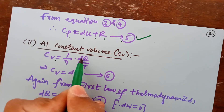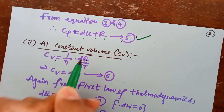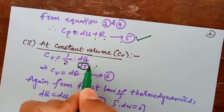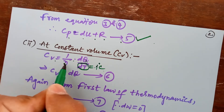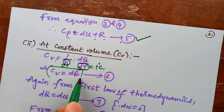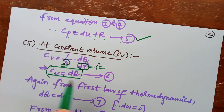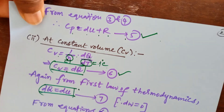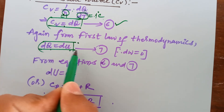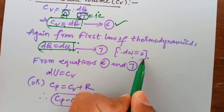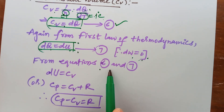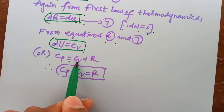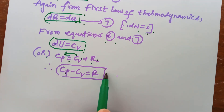At constant volume, the specific heat capacity Cv is the heat energy applied to one mole of ideal gas to raise the temperature by 1 degree Celsius. Since volume is constant, dV equals 0, so dW equals 0, and from the first law dQ equals dU. Therefore Cv equals dU (equation 6 and 7). From this, substituting into Cp equals dU plus R, we get Cp equals Cv plus R, which easily gives us Cp minus Cv equals R.